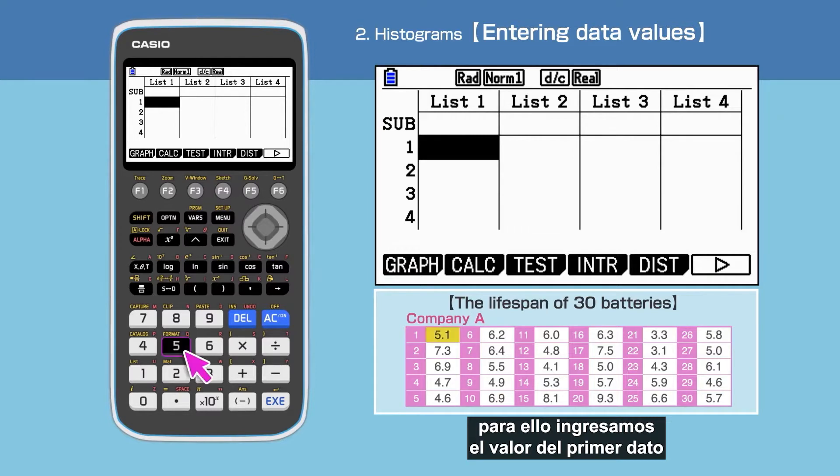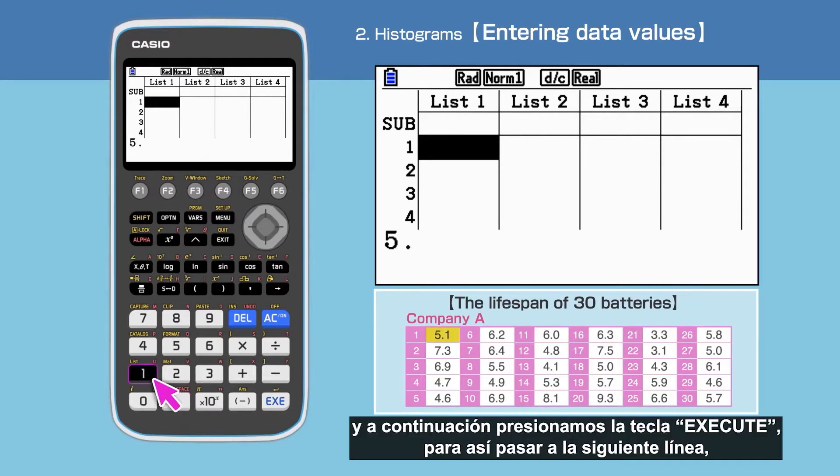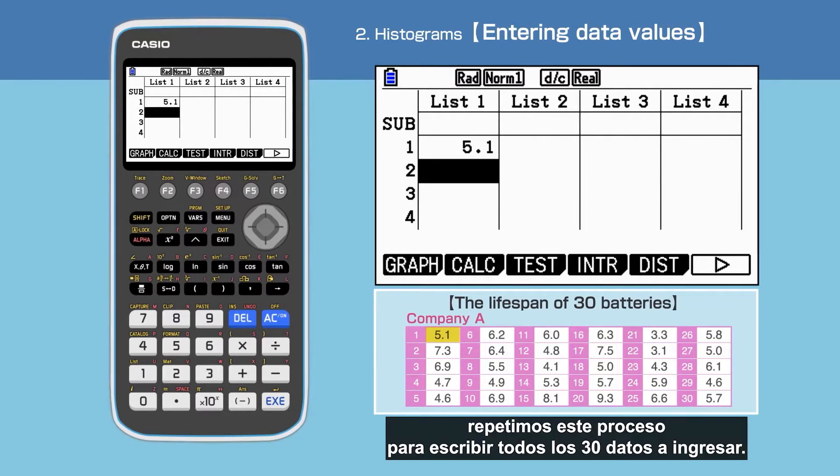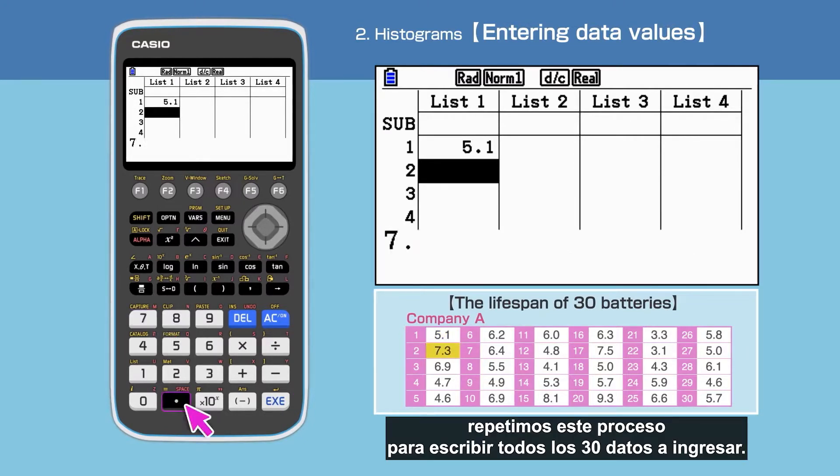We need to enter the first data value and then press execute to proceed to the next line. Repeat this to input all 30 data values.